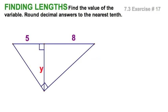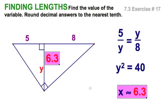Easy exercise here. y is the geometric mean between 5 and 8. So, set it up this way. 5 is to y, as y is to 8. Cross multiply, and take the square root. In simplified radical form, I suppose you'd have 2 radical 10.